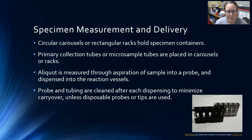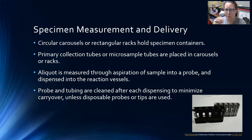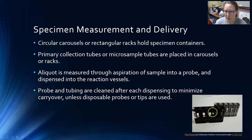Next is specimen measurement and delivery — loading the specimen on the analyzer and then the specimen being sampled and delivered to reaction vessels. Circular carousels or rectangular racks can hold specimen containers, so that could be the primary tubes loaded straight onto the carousels or the racks.